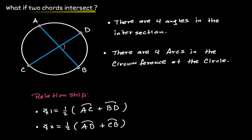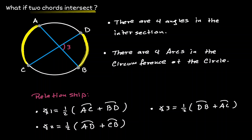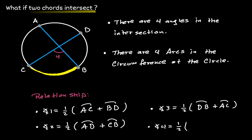If we consider the angle on the right, let's call it angle 3, that is also going to be equal to half of the sum of the opposite arcs — arc BD and arc AC. The same goes for the angle at the bottom, angle 4, which equals half of the sum of arc CB and arc AD.